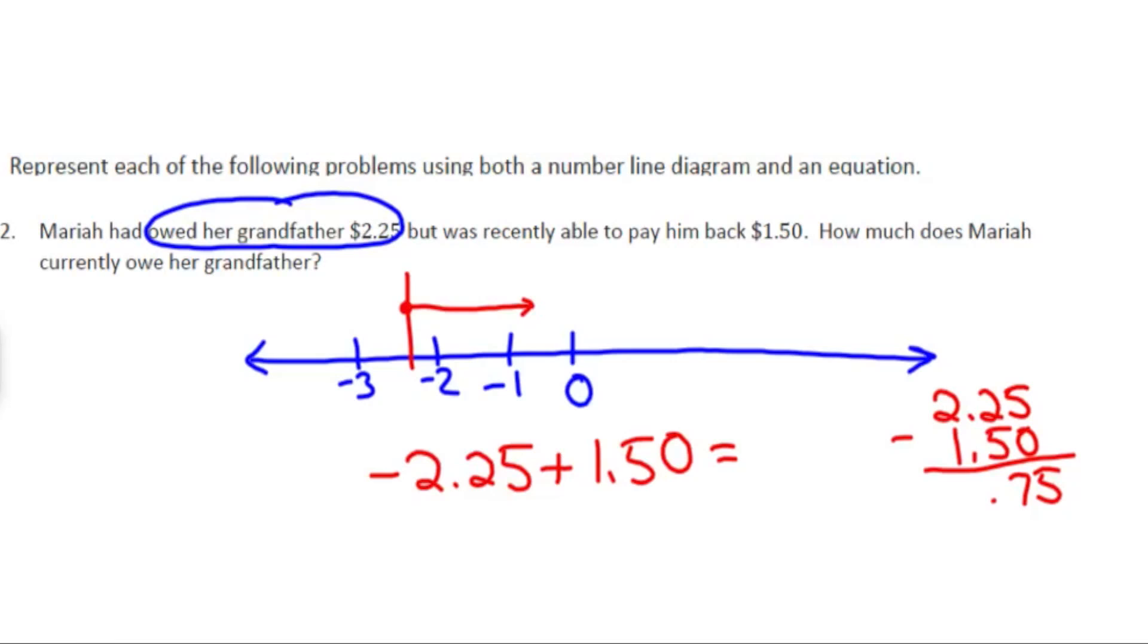That doesn't mean the answer is positive $0.75. And in this case, we notice that the answer is negative $0.75. So how much does she owe her grandfather? She owes her grandfather $0.75.